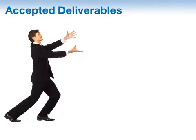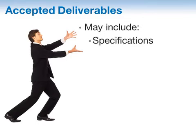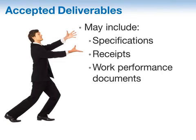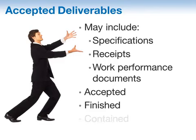Next, we have accepted deliverables as inputs. Deliverables may include things like approved product specifications, delivery receipts, and work performance information — those that have been accepted in the Validate Scope process. Remember, we perform this closing process not only at the end of the project but also at the end of a phase. We only use those deliverables that were accepted, finished, verified, and contained in this particular phase of the project that we are closing out right now.